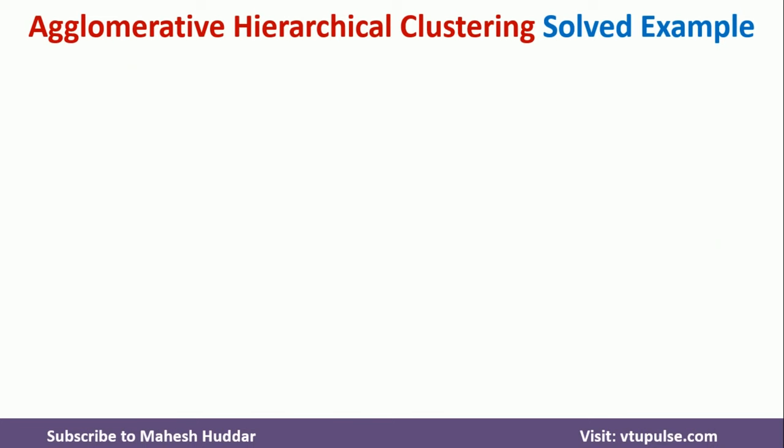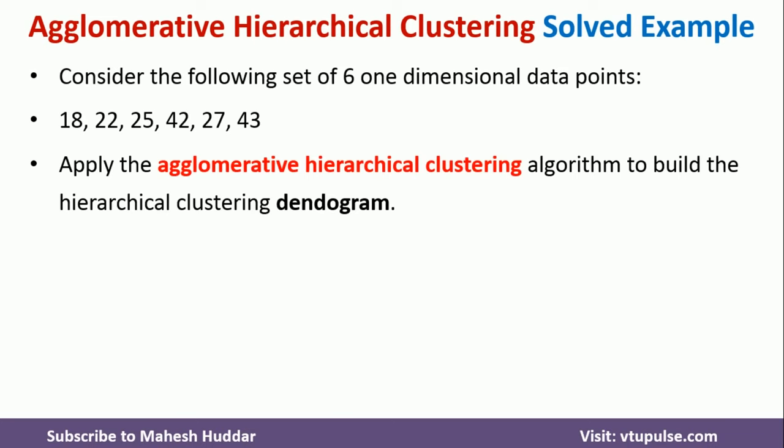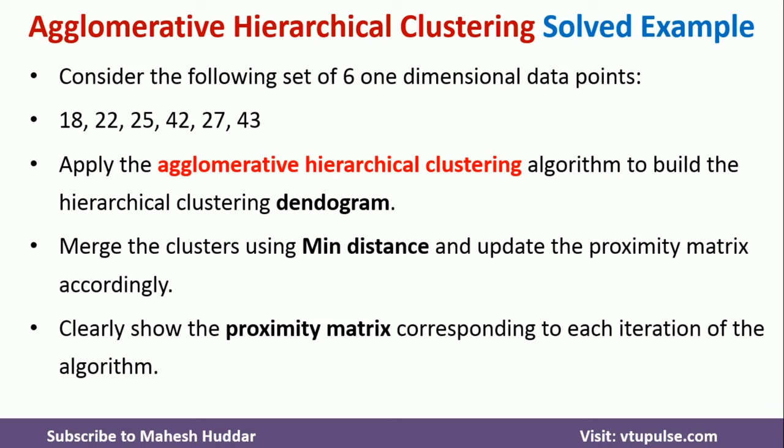Consider the following set of six one-dimensional data points: 18, 22, 25, 42, 27, and 43. We need to apply the Agglomerative Hierarchical Clustering algorithm to build the hierarchical clustering dendrogram. Merge the clusters using minimum distance and update the proximity matrix accordingly, clearly showing the proximity matrix for each iteration.